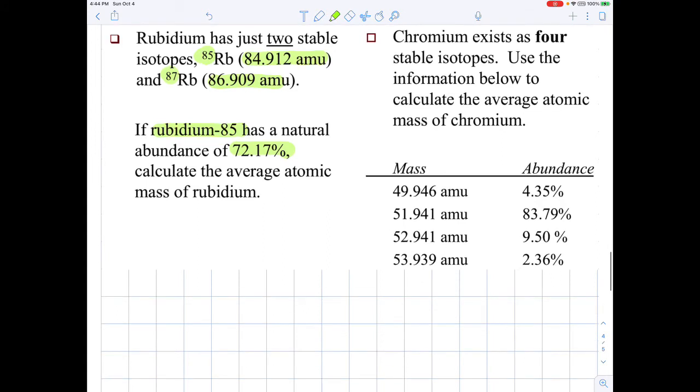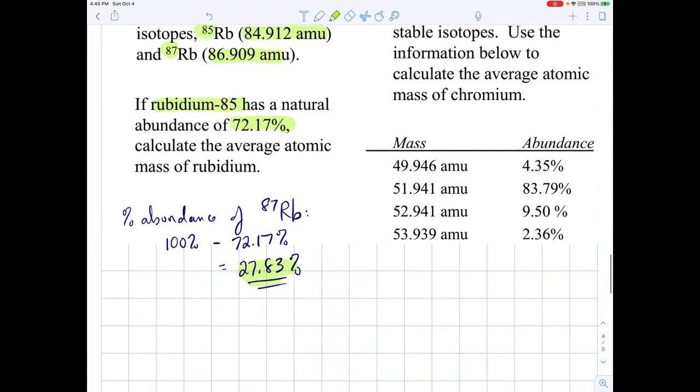Since there's only two isotopes, we can now easily calculate what the abundance of the second isotope must have been. So we're going to calculate the percent abundance of the second isotope, which would be rubidium-87. Again, we can do this because there's only two, and so they have to add up to 100 percent. So we take 100 percent and subtract the first abundance, 72.17 percent. Let's do this on a calculator. 27.83 percent is the abundance of the second isotope.